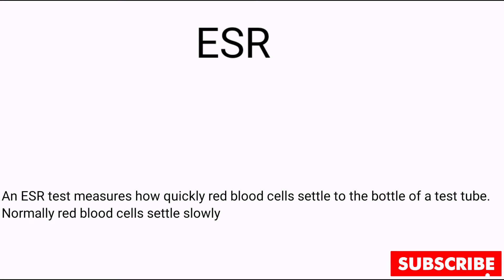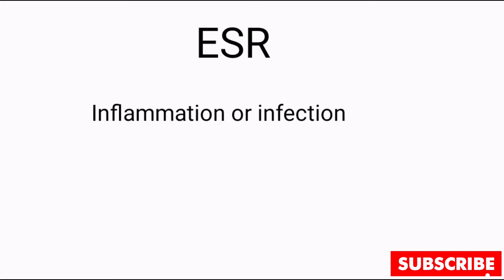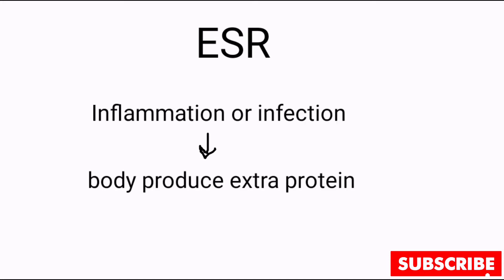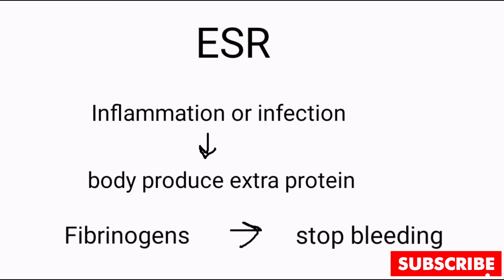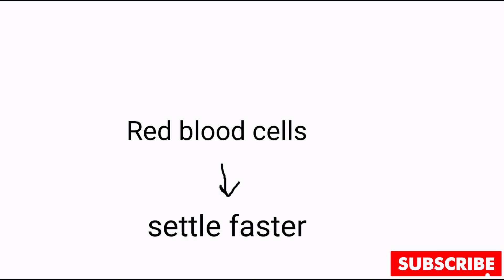Normally red blood cells settle slowly, but if a person has inflammation or infection, the body produces extra proteins like fibrinogen, which help stop bleeding. Inflammation or infection can lead to extra proteins in the blood, which can make the red blood cells settle faster.